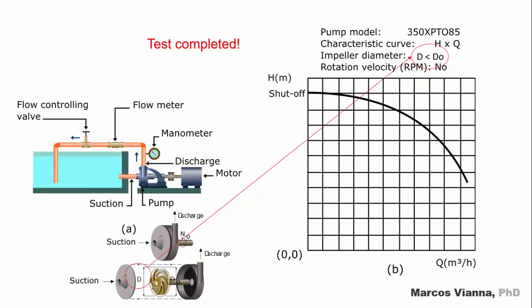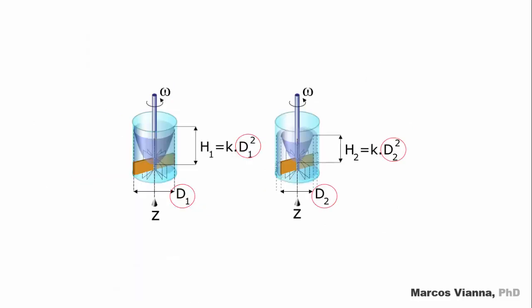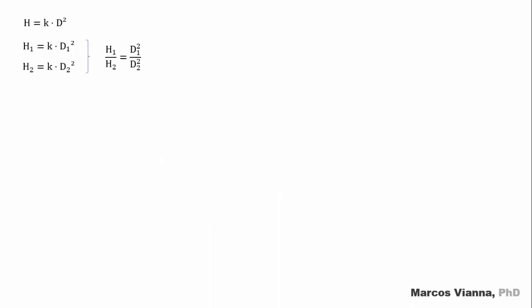But what will happen if we run the same test for a smaller impeller? Another curve will be obtained. Here it is, in the technical material supplied by the manufacturer. We can obtain this new curve using the concepts that we have seen before. Let's remember. The height difference of water between the edge and the center is proportional to the square of the diameter. So, this relationship can be obtained.